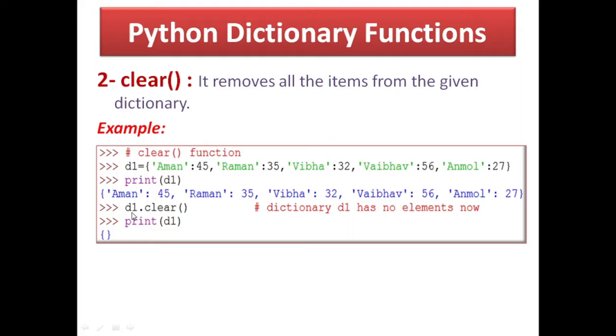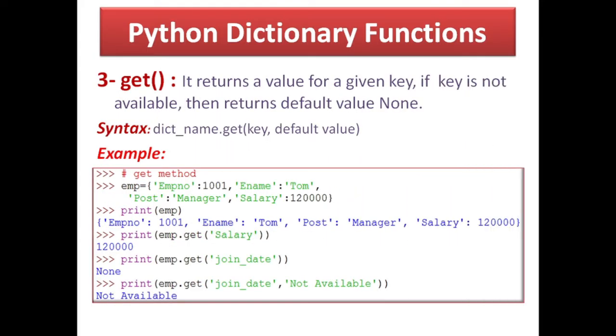If you print D1 then it shows an empty curly bracket — that means dictionary D1 already exists in memory. You can also check its id. Some memory cell is allocated for D1. The dictionary is not permanently deleted — only its elements are deleted. To permanently delete a dictionary, as I mentioned in the previous video, you can use the del statement.